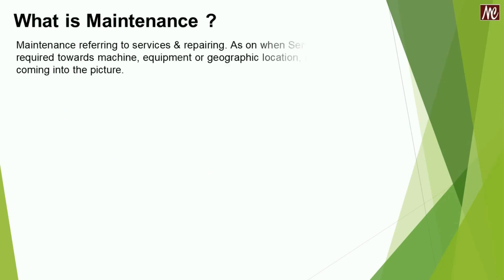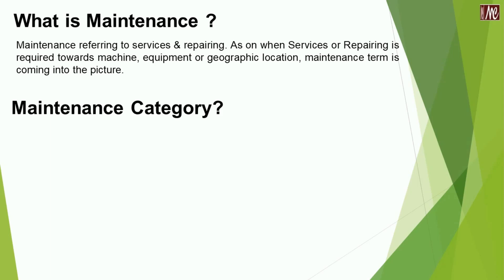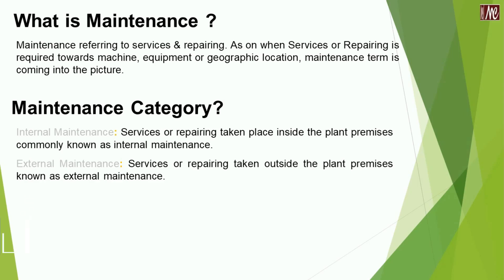Moving to point number 1, first of all we have to know what is maintenance. Maintenance refers to service and repairing — as and when service or repairing is required towards a machine, equipment, or geographical location, the maintenance term comes into the picture. Maintenance categories are divided into two types: internal maintenance and external maintenance. If the service or repairing takes place inside the plant premises it comes under internal maintenance. Similarly, if it takes place outside the plant premises it is called external maintenance.